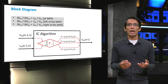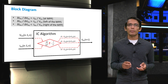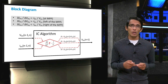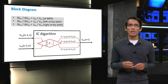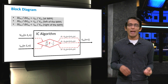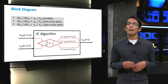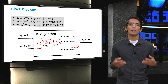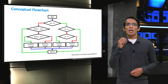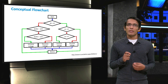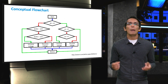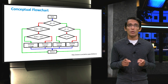The block diagram for the incremental conductance method can be seen here. As inputs, we need the instantaneous voltage and current, as well as the voltage and current from the previous measurement. From this, both the instantaneous and incremental conductances can be calculated. Based on this comparison, the next voltage is calculated and applied to our PV system. The logic of the incremental conductance technique is also shown through a conceptual flowchart, which will be available on the course platform.